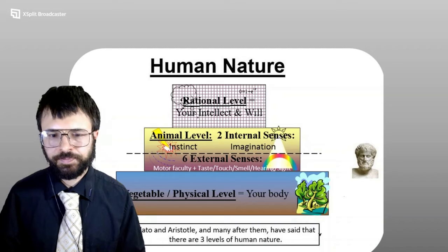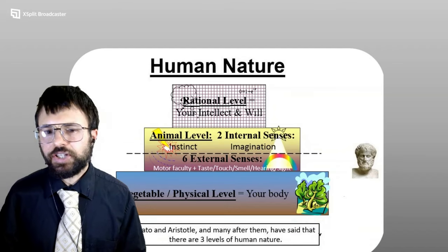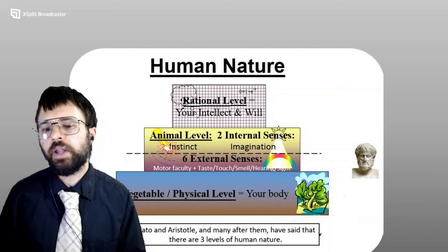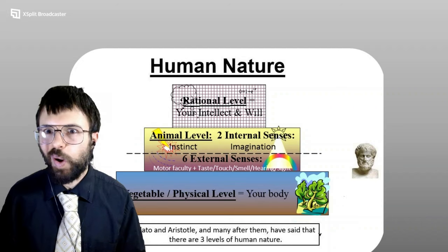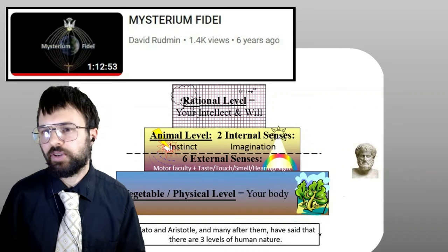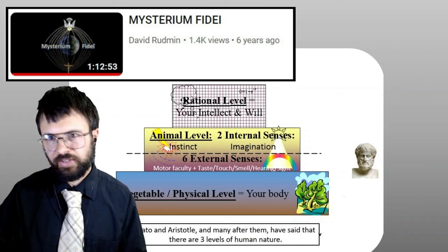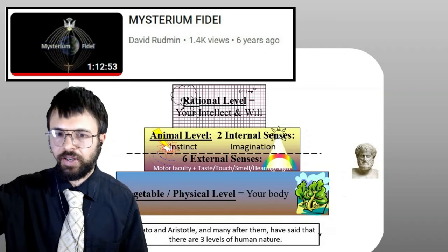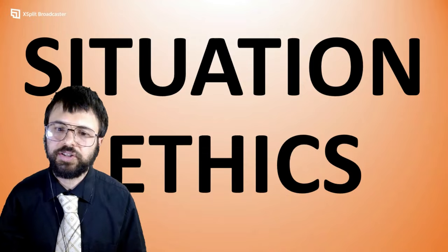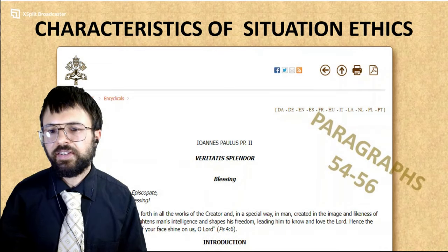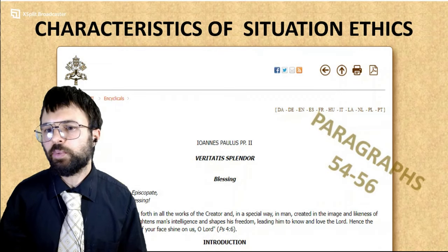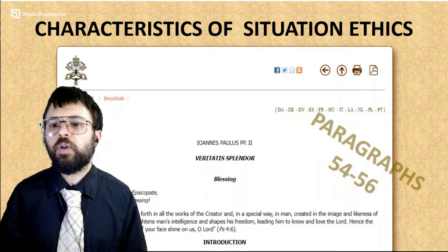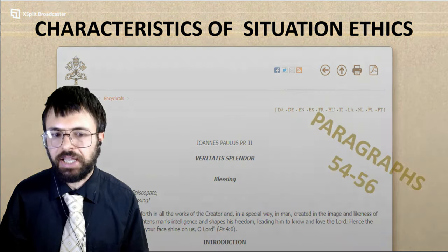First, situation ethics. With any Christological heresy, you want to be able to graph it somewhere on the pyramid of human nature given to us from Plato and Aristotle, and also other places like Genesis 1 and certain places in the book of Revelation like the seven churches. It's also throughout systematic theology any time you have a group of seven. Situation ethics is going to have three integral parts, and we're going to take these from three paragraphs in John Paul II's great moral encyclical Veritatis Splendor — the splendor of truth.